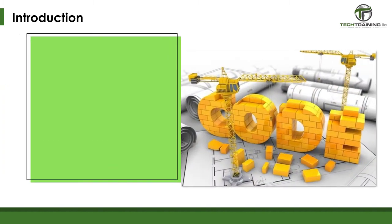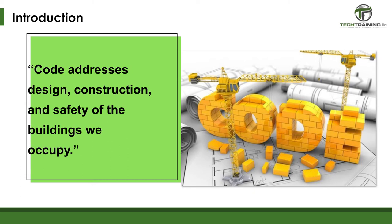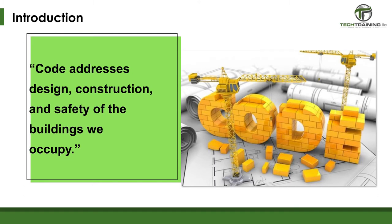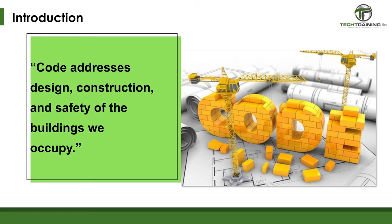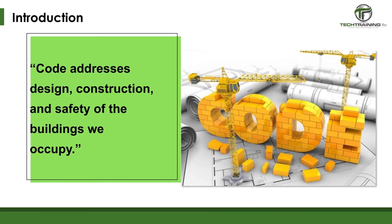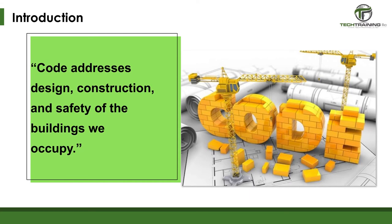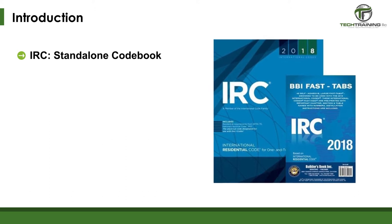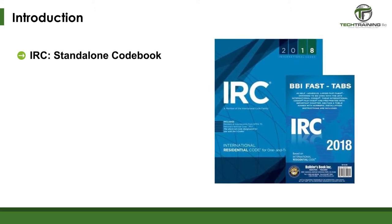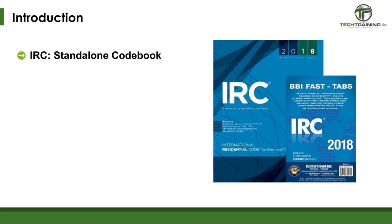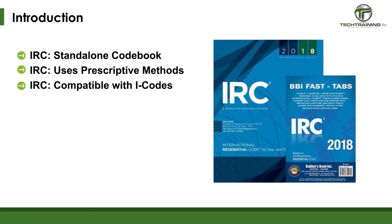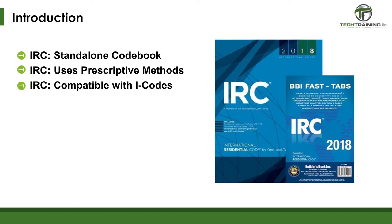Not just here in the U.S., but around the world, code officials recognize the need for modern, up-to-date residential codes that address the design and construction of one- and two-family dwellings and townhouses. The International Residential Code, or IRC, is designed to meet the needs of those in the built environment through model code regulations that protect the public health and safety in all communities.